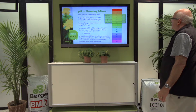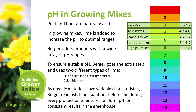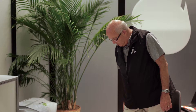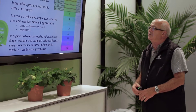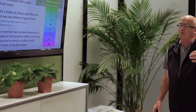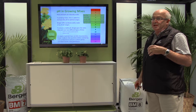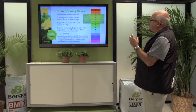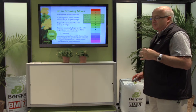Raw peat is at pH 3 to 4. A finished acid mix labeled as an acid mix would be 4.2 to 4.8. We have low pH mix at 4.7 to 5.4, our standard mix pH at 5.4 to 6.2, and high pH mixes at 6.2 to 6.8. The reason for varying pH differences in our mixes is that certain plants can grow only within a very specific range of pH, and we try to accommodate the customer with a mix that fits into that pH range.